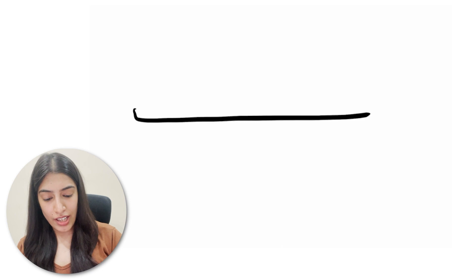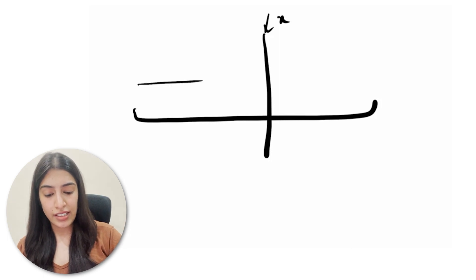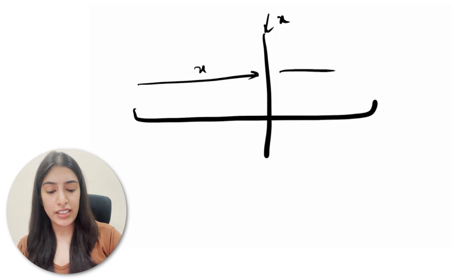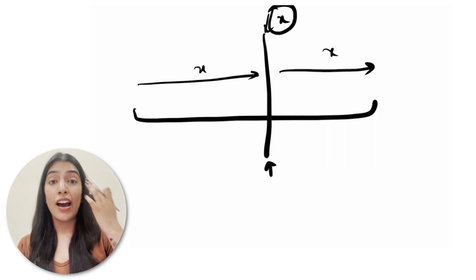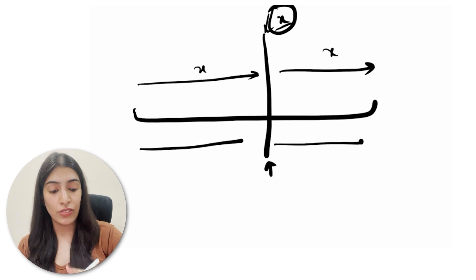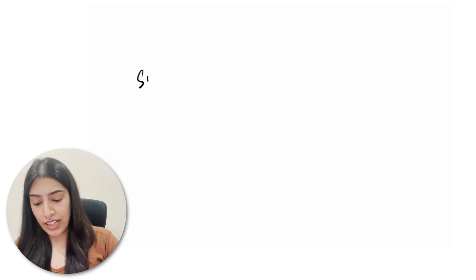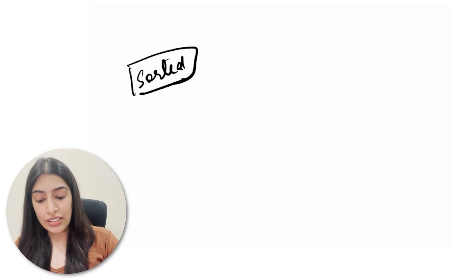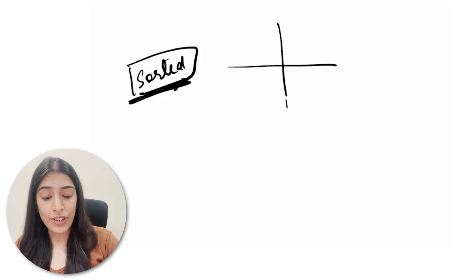There are only three possibilities: the middle element is x, x exists on the left side, or x exists on the right side. If the middle element is x, we return the answer with its index. Otherwise we compare x to the middle element and check only one of the two halves, because the numbers are sorted. The most important point to remember is that the elements must be sorted — this is what the entire concept is based on. Many students make the mistake of applying binary search to unsorted arrays.